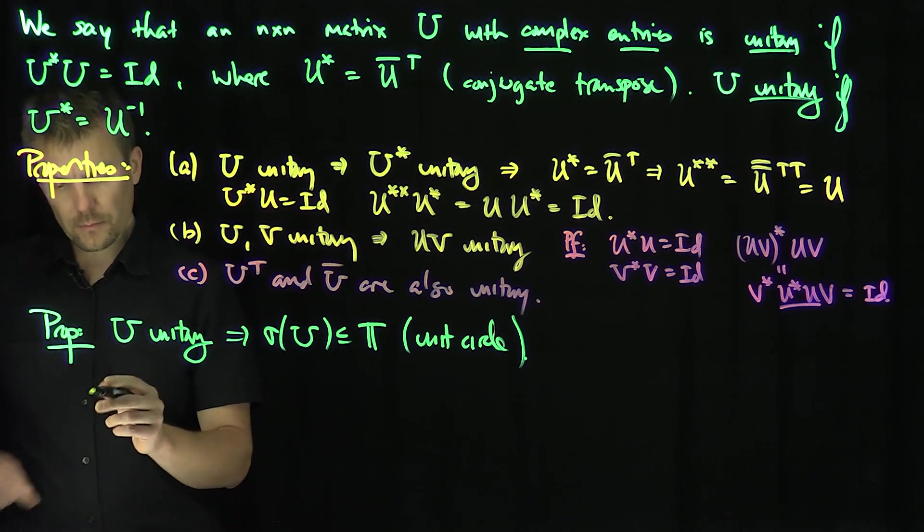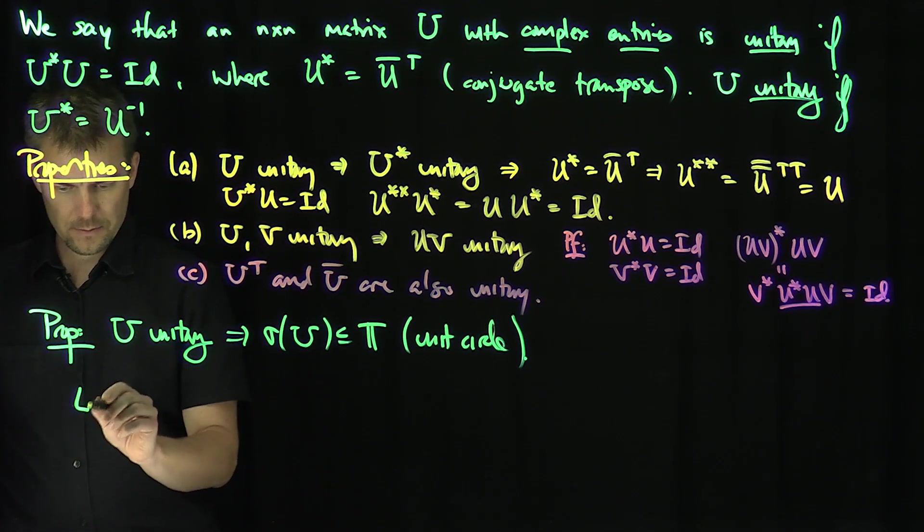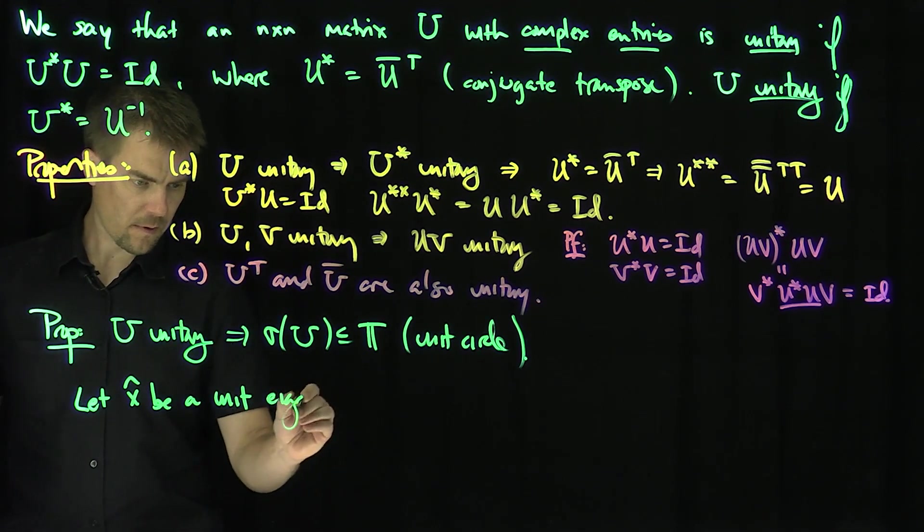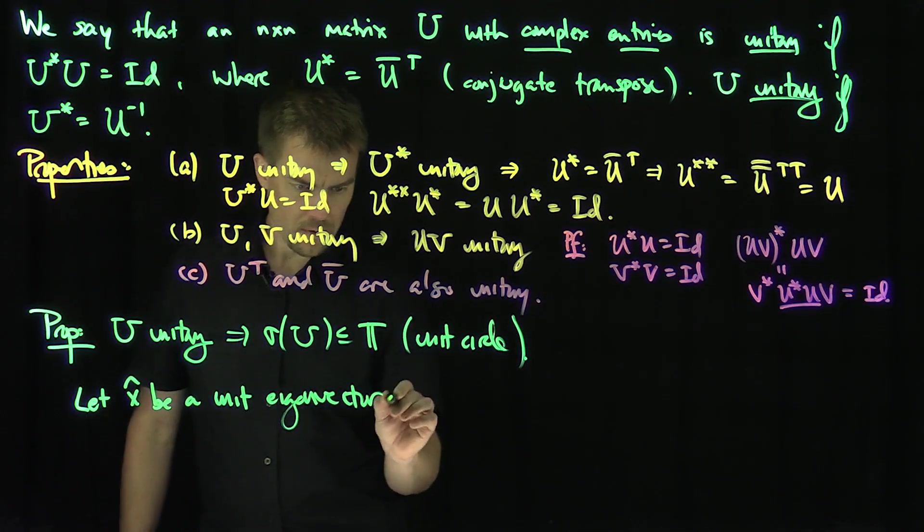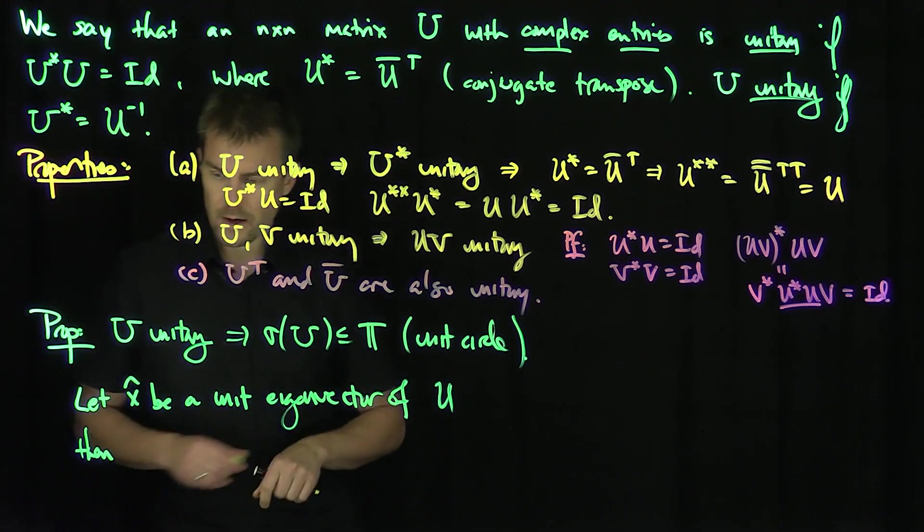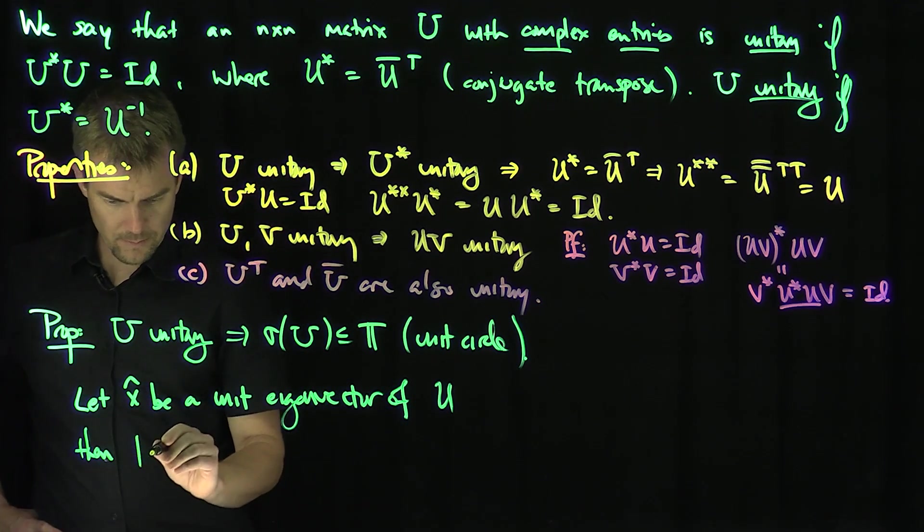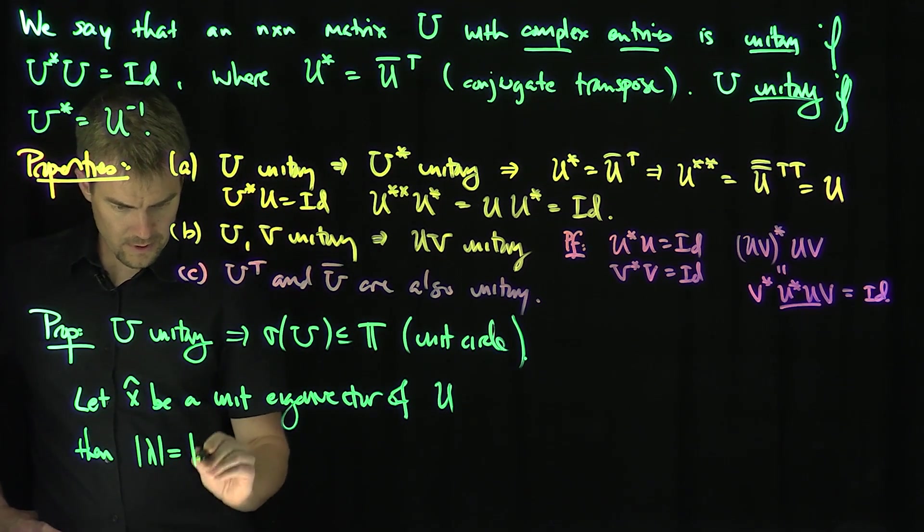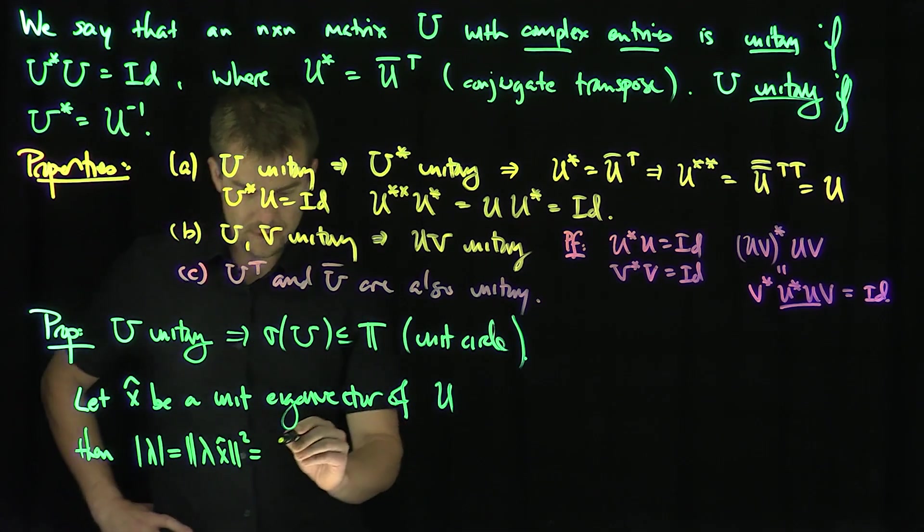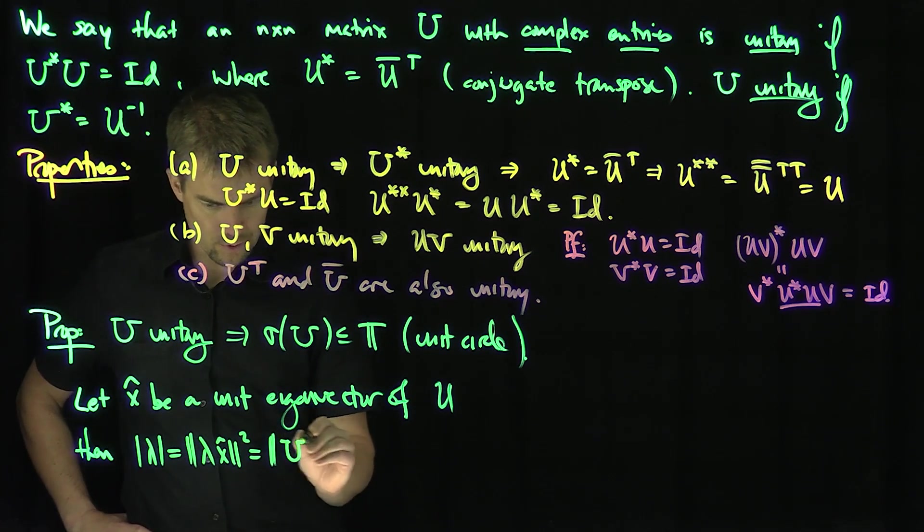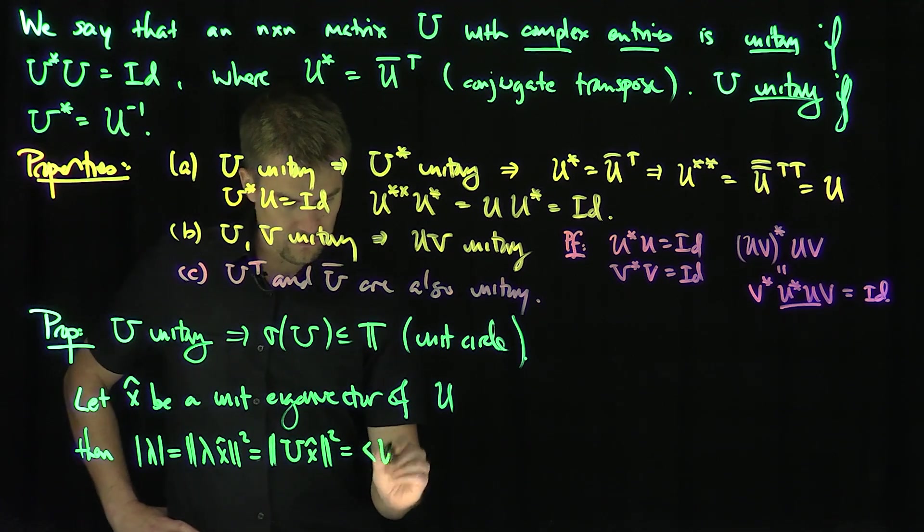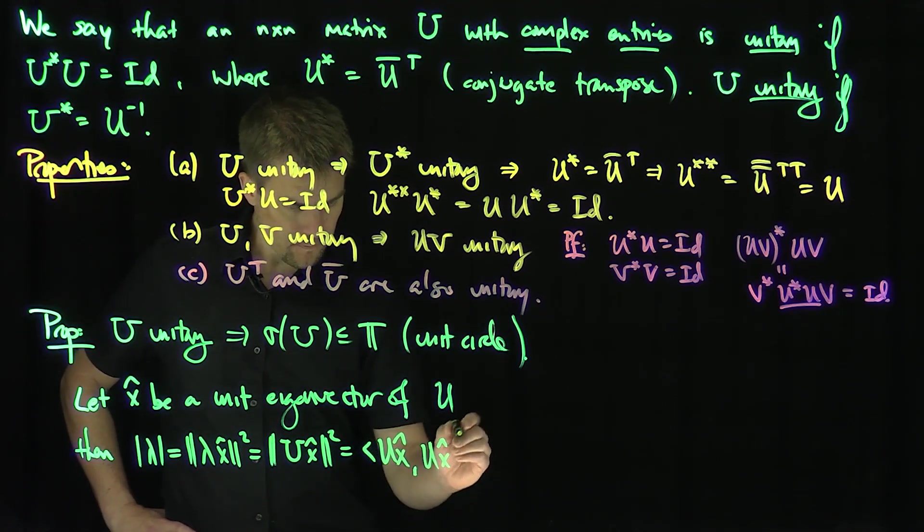And so here's the proof. So if we let X hat be a unit eigenvector of U, then I know that the modulus of lambda is the modulus of lambda, is the norm of lambda X hat squared, which is exactly just, since it's an eigenvalue of U, it's just U of X hat squared, which is just the inner product of U X hat with U X hat.